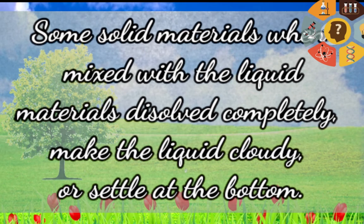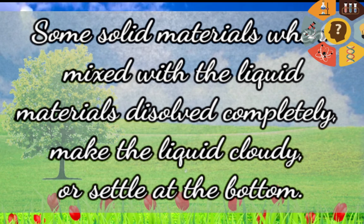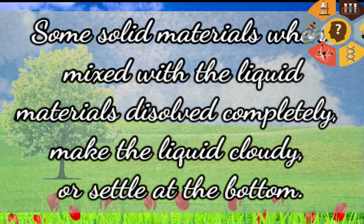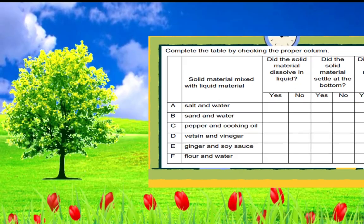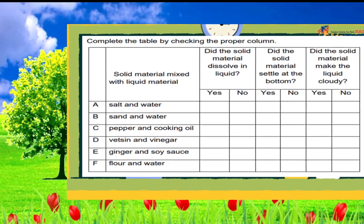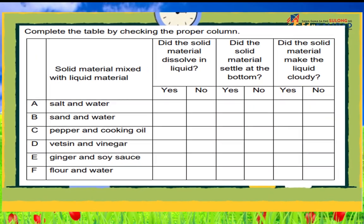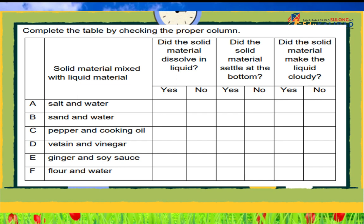As we observe, some solid materials when mixed with liquid dissolve completely. Some make the liquid cloudy or settle at the bottom of the water. Complete the observation table by checking the proper column: Did the solid material dissolve in liquid? Did the solid material settle at the bottom? Did the solid materials make the liquid cloudy?